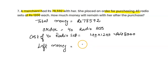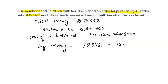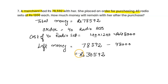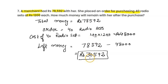The money left with the merchant equals total money minus the cost of the radio sets: 78,592 minus 48,000 equals rupees 30,592. This is your answer. Thank you.